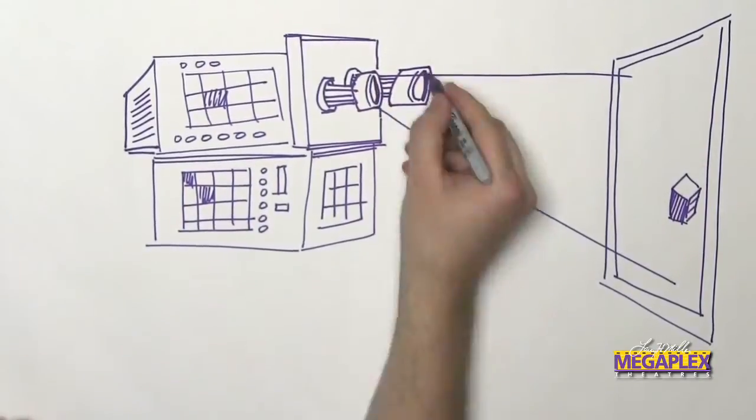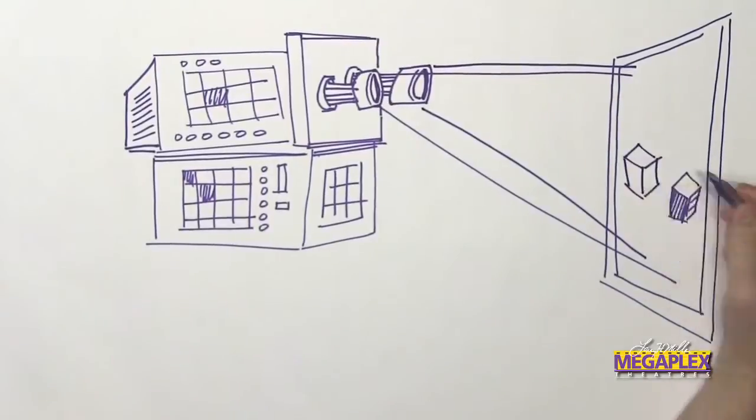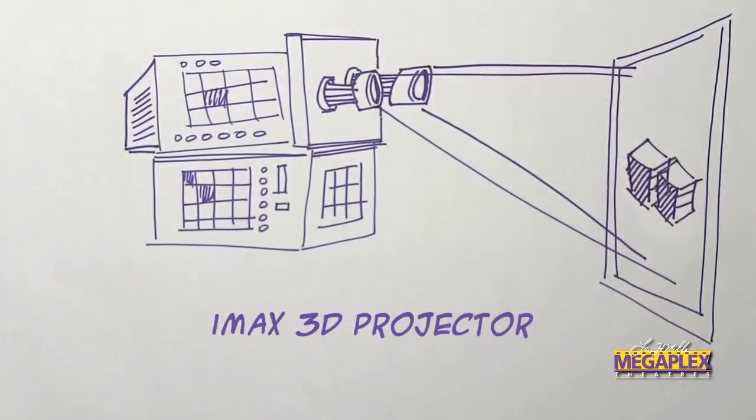IMAX features dual projection, which means all of the information is on screen all the time. So you get an even brighter and more consistent image on screen.